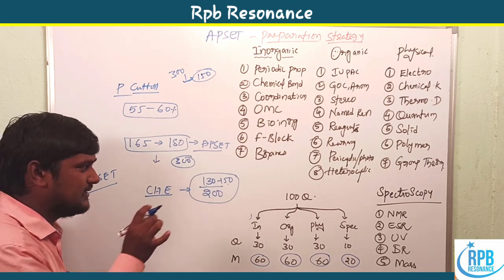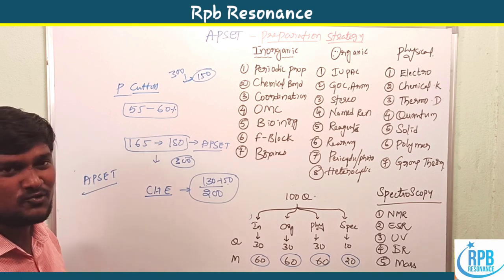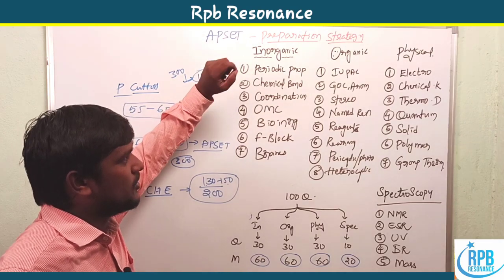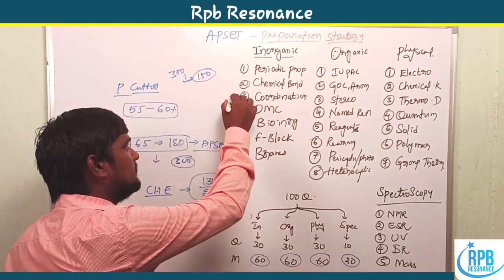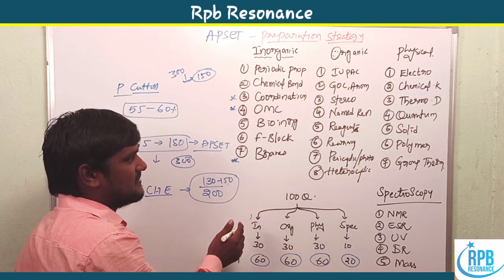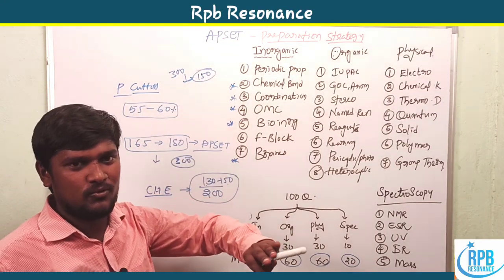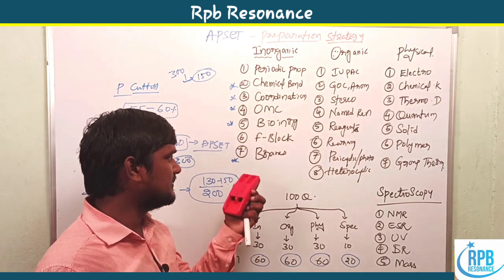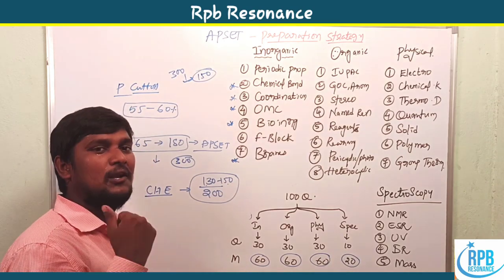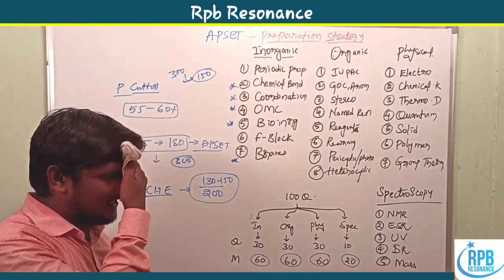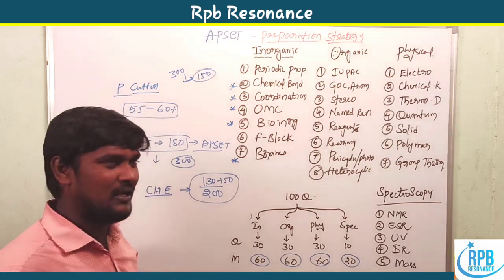To score 130 to 150 marks, you need to cover around 27 to 30 topics. In inorganic chemistry, important topics include periodic properties, chemical bonding, coordination chemistry, organometallics, bio-inorganic chemistry, f-block elements, and boron clusters. Coordination chemistry and organometallics carry the most weight. F-block topics like ionization enthalpy and ion exchange chromatography elution order are frequently asked.